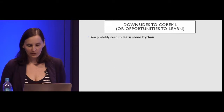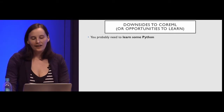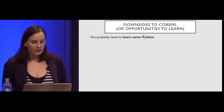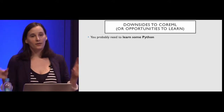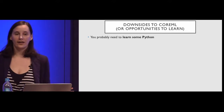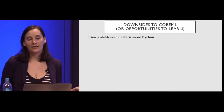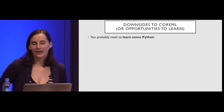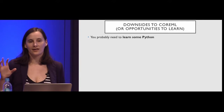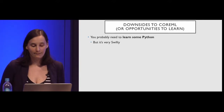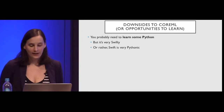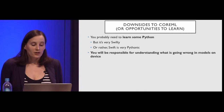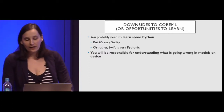Some downsides or learning opportunities with CoreML: you probably need to learn some Python. You want to be doing those model conversions yourself to have as much control over this new area in your app as possible. Getting a little Python into your brain if you don't have it will be really helpful for owning the entire AI pipeline in your app — and it's very Swifty, so this should be a fairly easy transition.